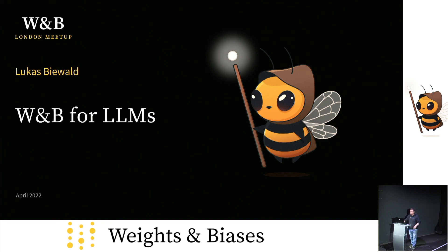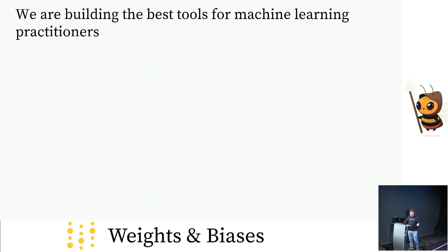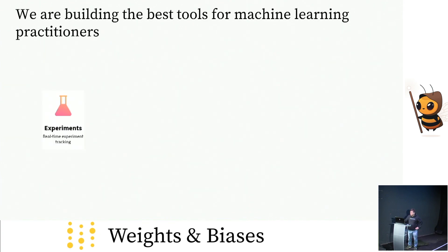A lot of you actually hadn't used Weights and Biases. Before we get into Weights and Biases for LLMs, I just wanted to go through what Weights and Biases does. Our mission has always been to build the best tools for machine learning practitioners — we define machine learning practitioners broadly as anyone that's trying to make machine learning models work in the real world. The history of the company in a nutshell: it's actually been five years. We started with just me and that co-founder back in San Francisco, and we built a thing called Experiments to help people do experiment tracking.